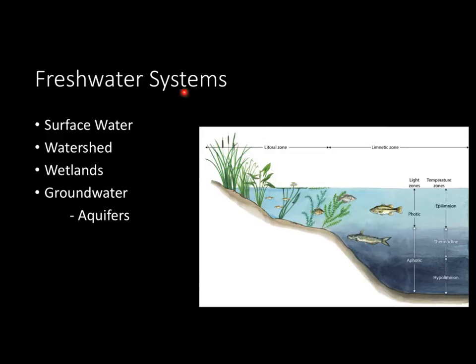First, let's take a look at freshwater systems — surface water. Surface water is basically what it sounds like: it's the water on the surface of our planet, and that only accounts for 1% of all of the Earth's freshwater. The term watershed is something you're going to want to know for APES. A watershed is basically the area of land drained by a river system.